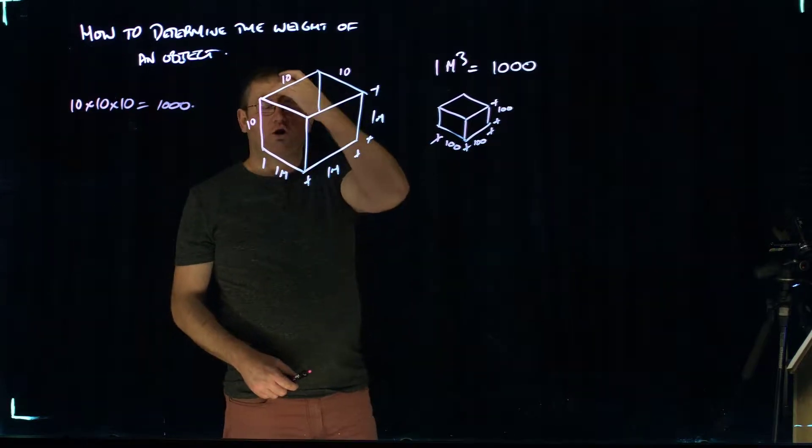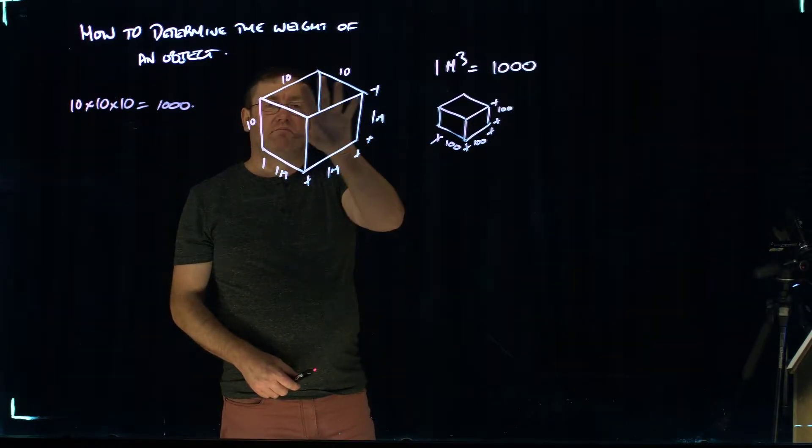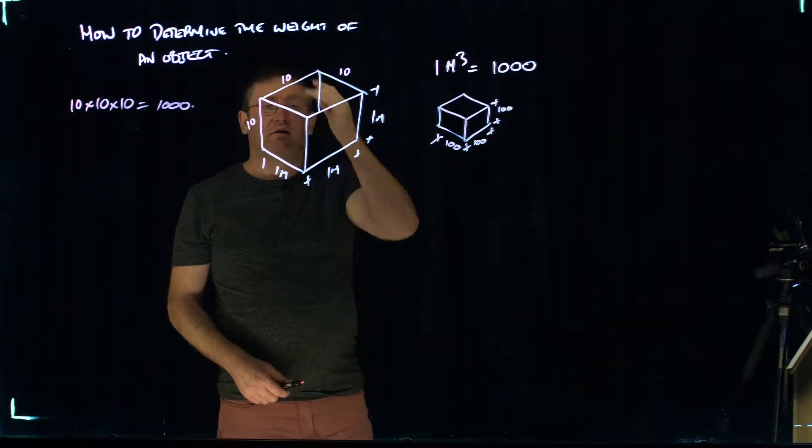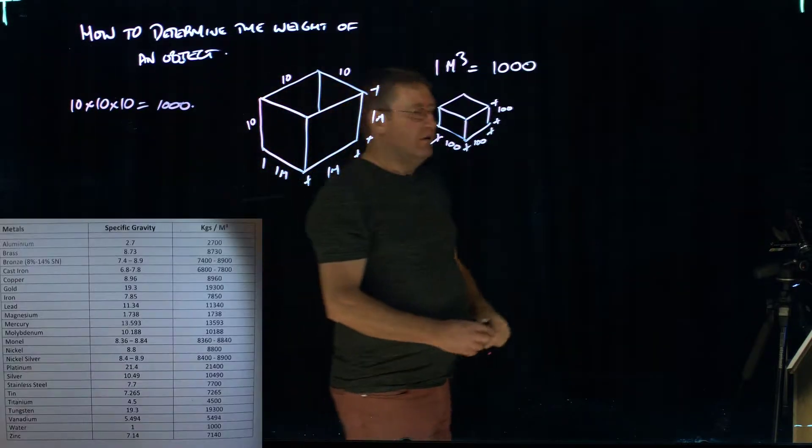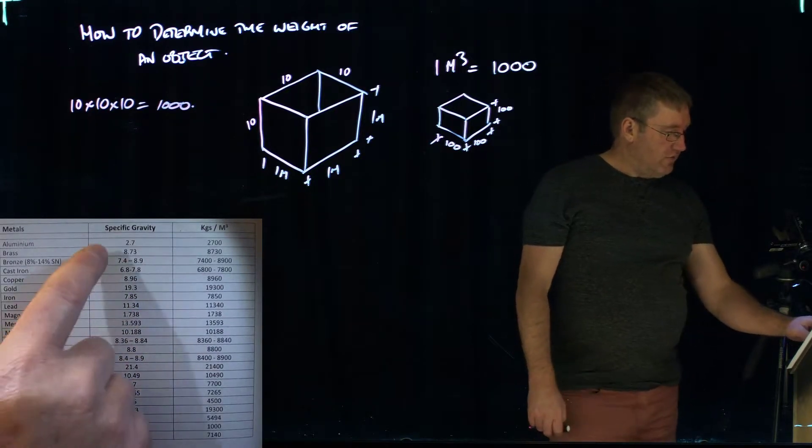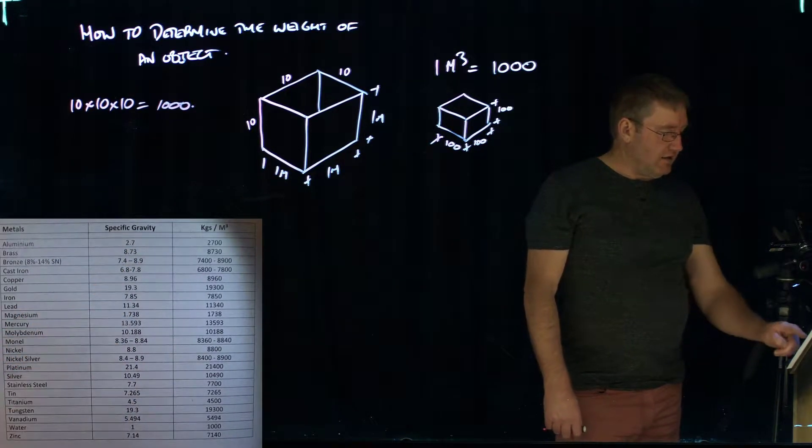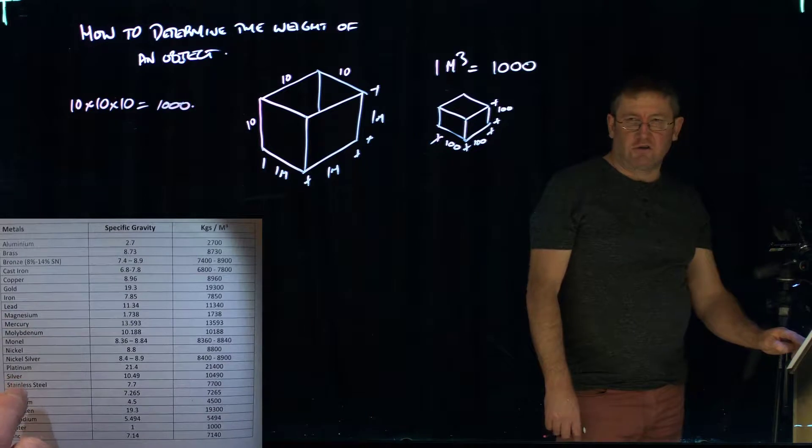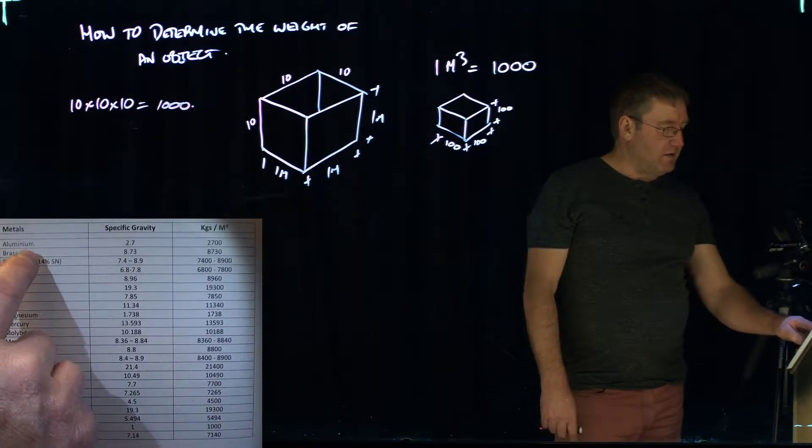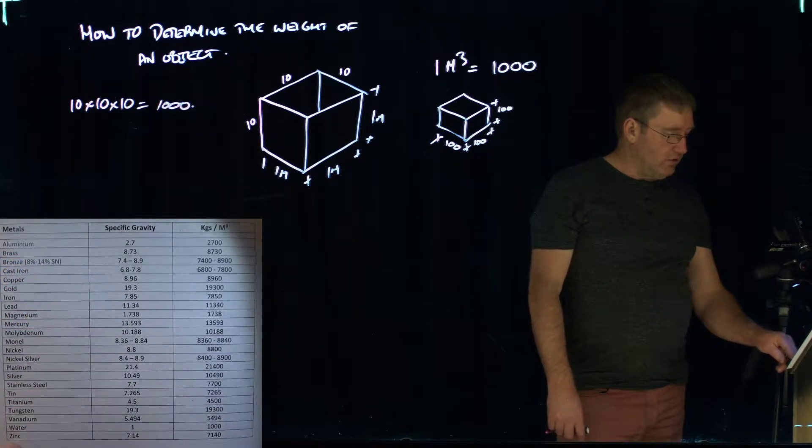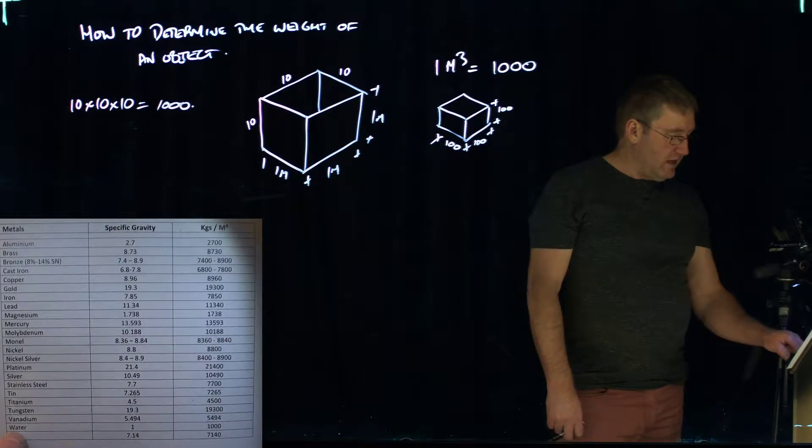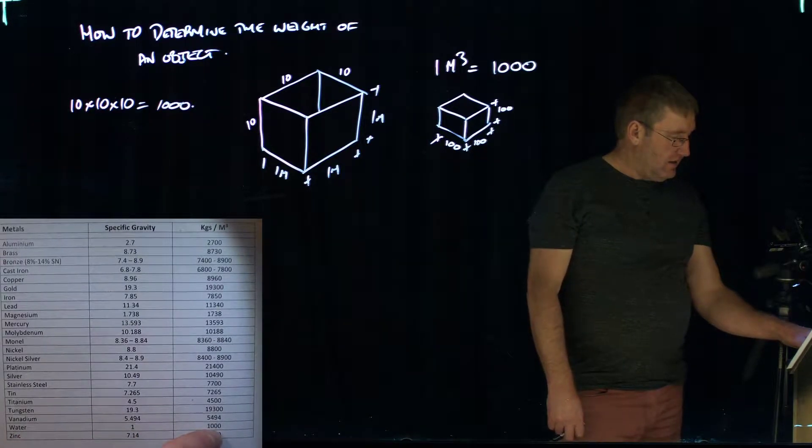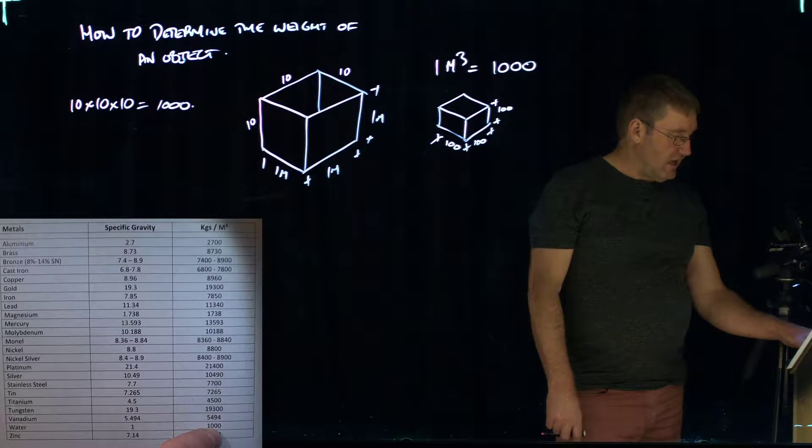So inside that cube, 1 meter cubic, let's say it's a box or a tank, 1 meter cubed, it has 1,000 liters in it. Now if we come over here to this chart, I've got a specific gravity chart here. Down the left-hand side, I've got some different materials: aluminum, brass, bronze, cast iron, all the way through to zinc.